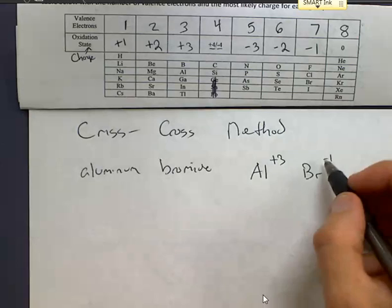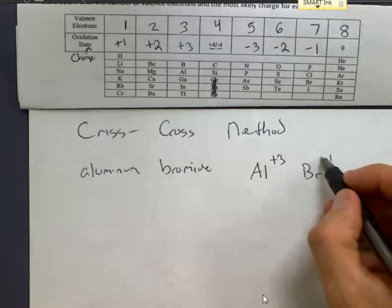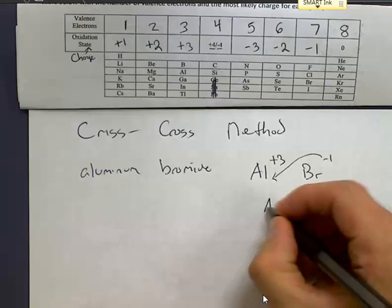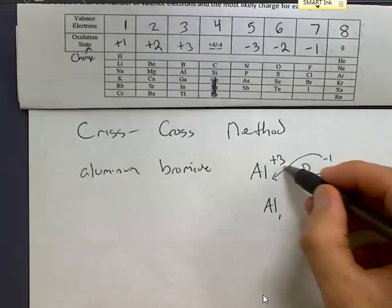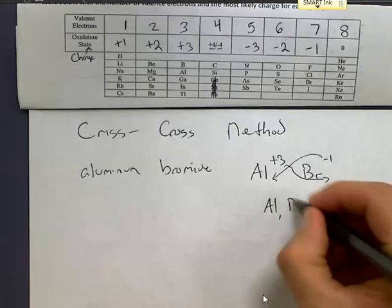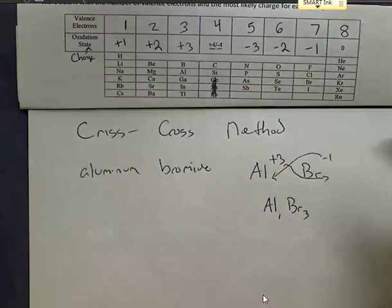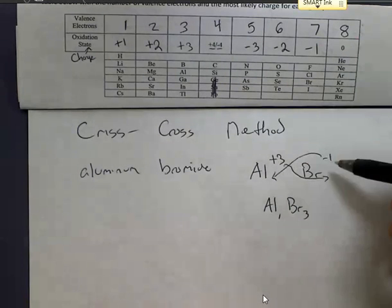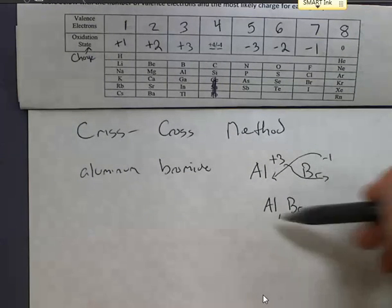All we're going to do is criss-cross method - it's as simple as it sounds. We're going to take this number and bring it down and make it the new subscript. So Al1, bring the 3 down, make it the new subscript for bromine. Now you'll notice I dropped the positive and negative charges. These are just numbers. There's no signs.